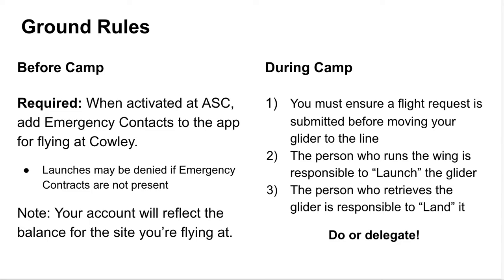It's the expectation of ground operations that the person who runs the glider wing is responsible to launch it within the app, and the person who retrieves the glider is responsible to land it. This doesn't mean these individuals have to do this themselves — they can delegate that responsibility to someone else. If you don't have a smartphone, you might have to ask a friend to make your flight request, or designate someone to launch or land gliders if you find yourself running wings or retrieving gliders.